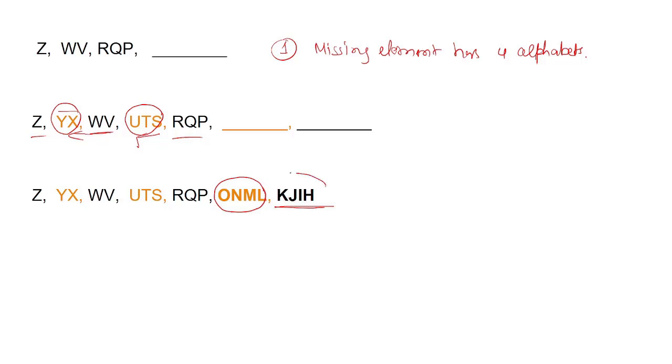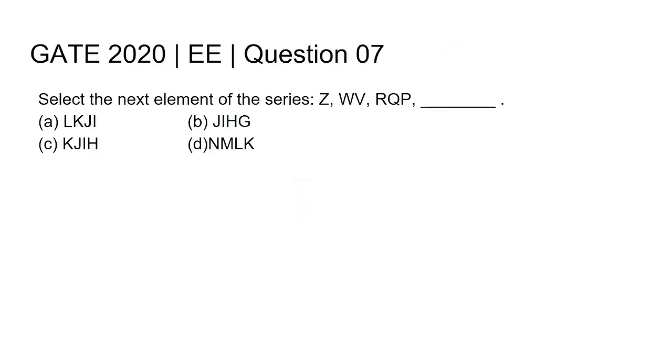So our answer will be H, I, J, K. The answer to this particular question would be Option C: KJIH.